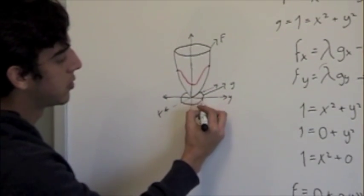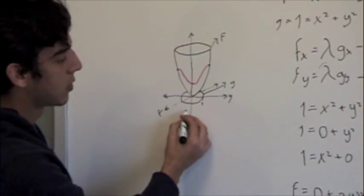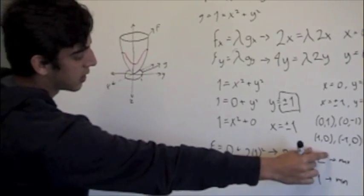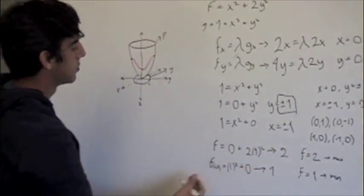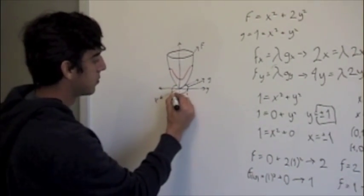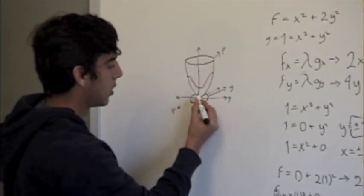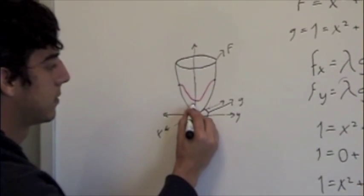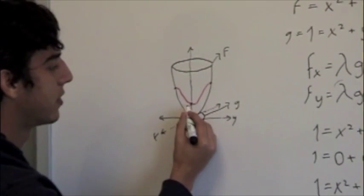Our (0,1) is our max. In the other case, for our min, we found that it's 1 and it happens at (1,0). So we move 1 unit in x and we don't move in y, so we're going to get this point right here.